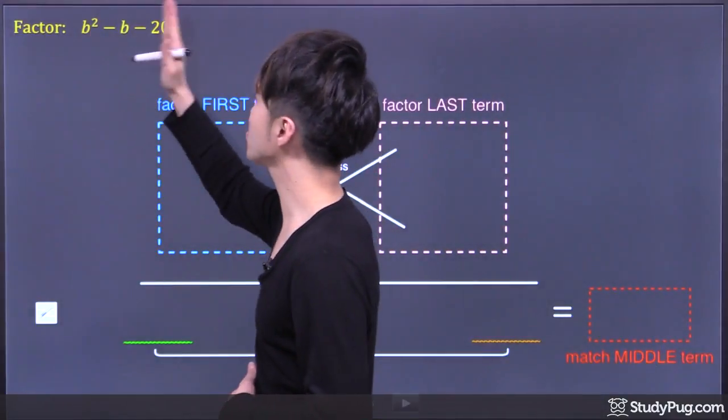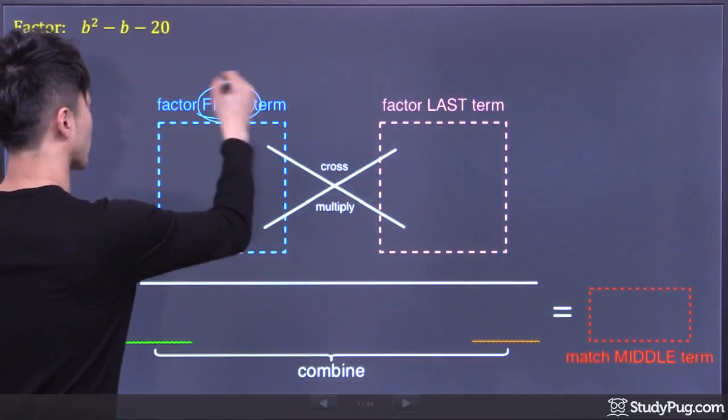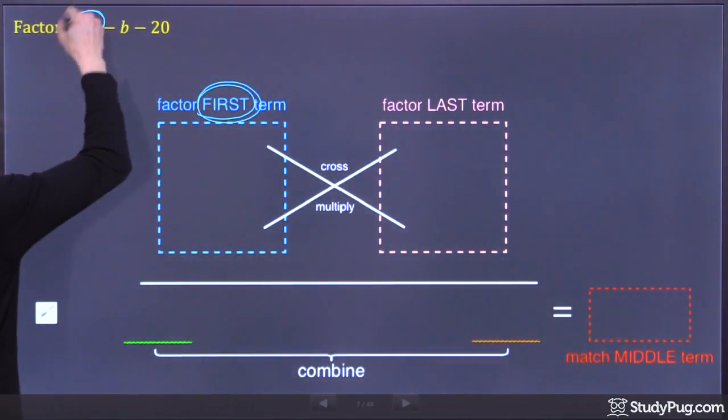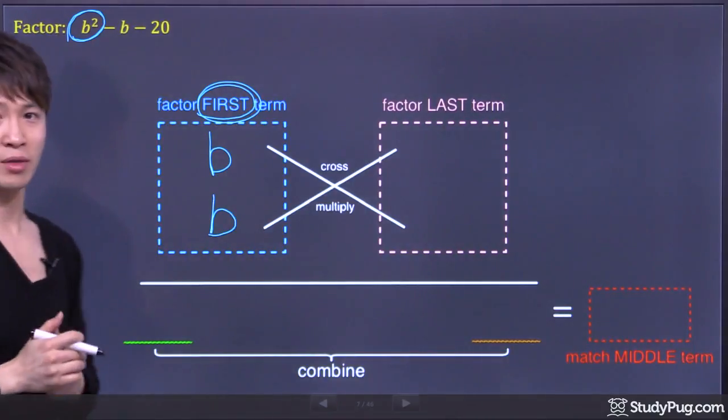Factor the trinomial b squared minus b minus 20. First thing we do, factor the first term. So we can factor b squared into b times b. That's an easy one.